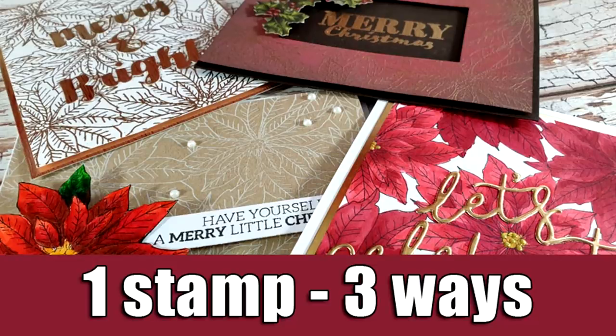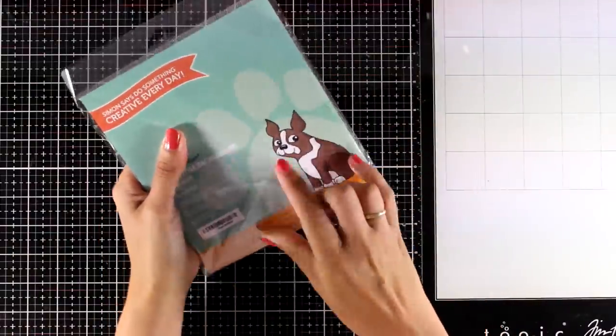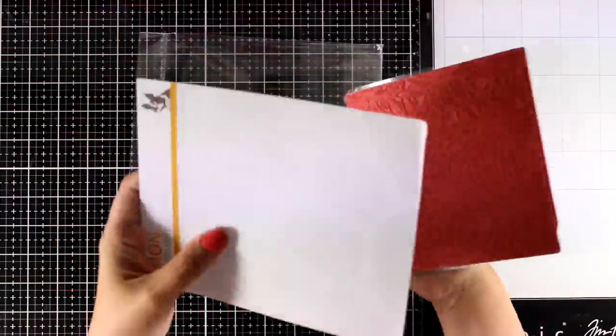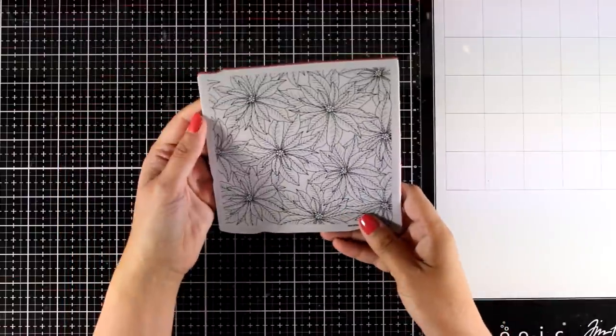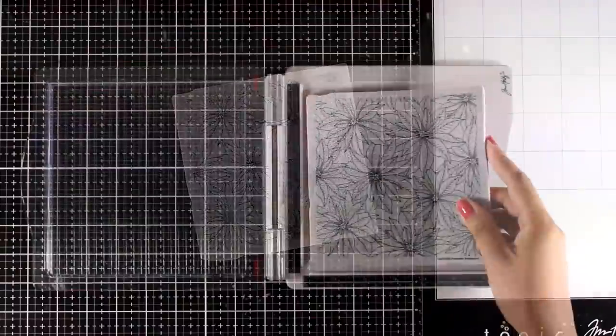Hi everyone, it's Vicky here and today I'm back creating 4 cards. This time I will be using a background stamp and I will show you 3 different techniques to create different cards using the same stamp. Now this is a background stamp from the latest Stamptember release by Simon Says Stamp and it features those beautiful poinsettias, so I'm going for Christmas cards today.